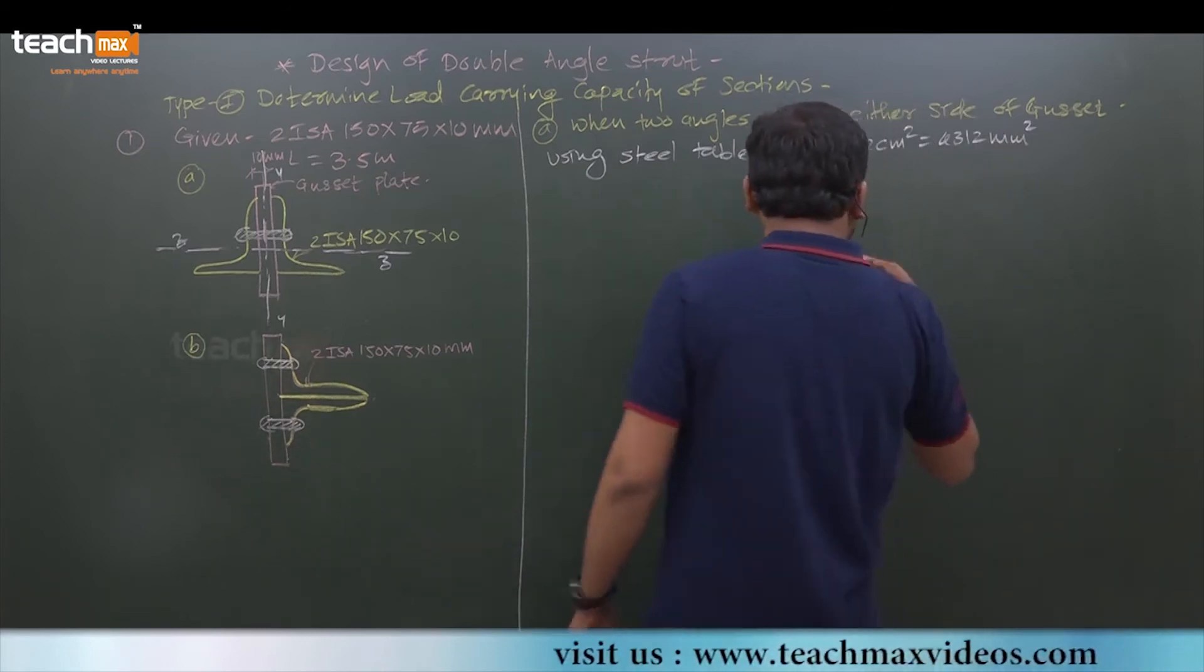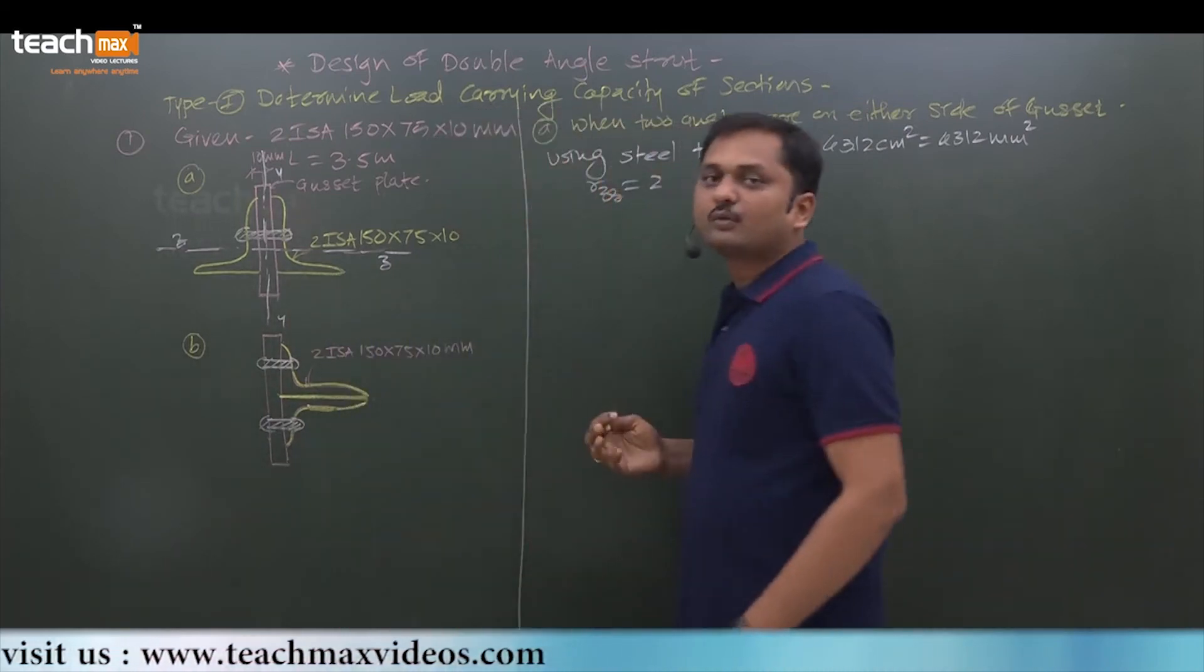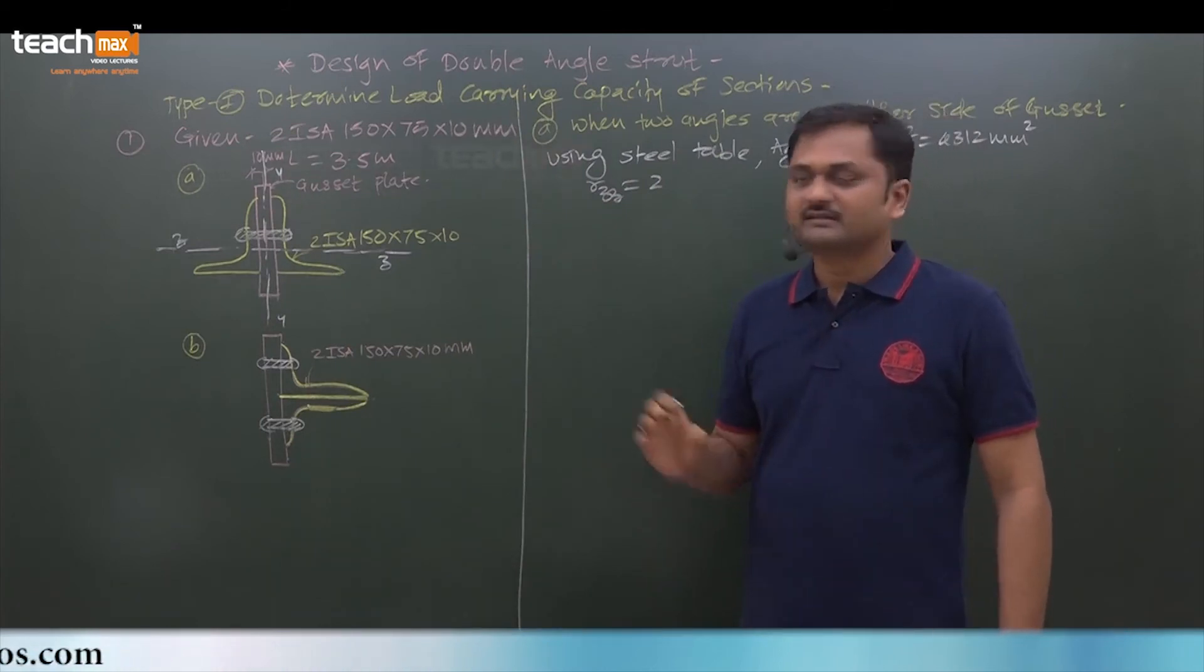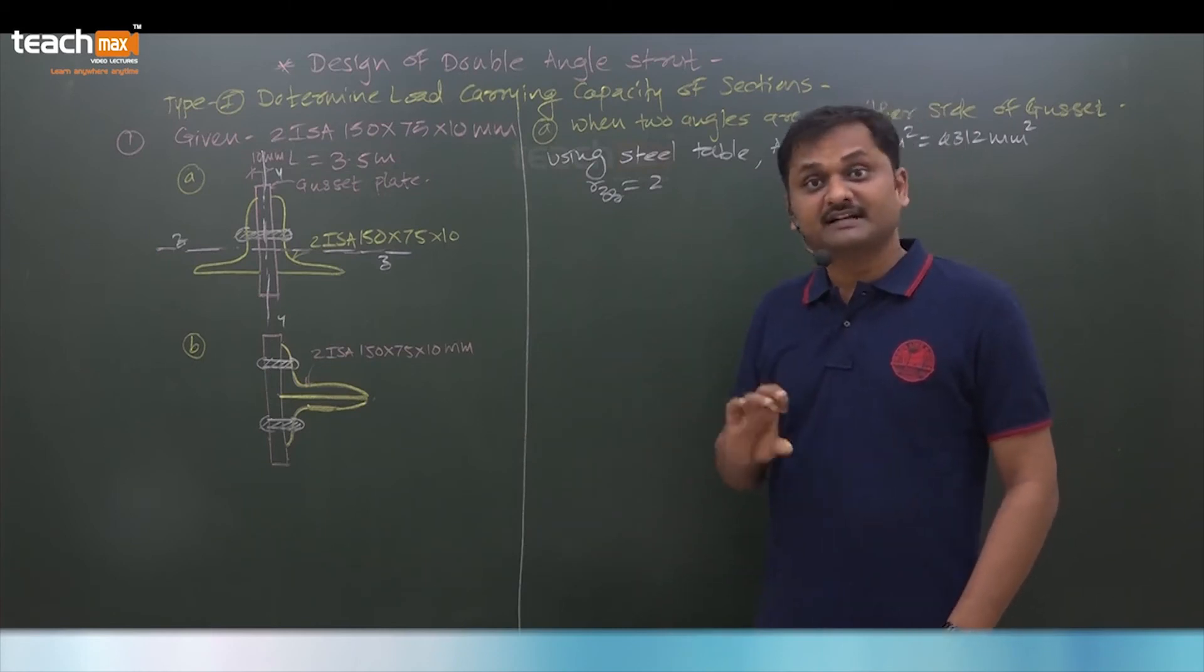So rzz we got. We don't know whether rzz is minimum or ryy is minimum. It totally depends on the gap between the two angles, that is thickness of gusset plate.